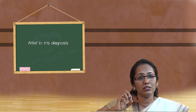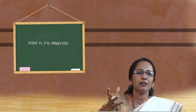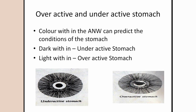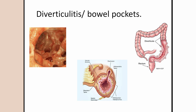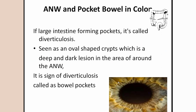You can also see overactive and underactive stomach conditions from the iris. The color changes in the area within the autonomic nerve wreath indicate how your stomach acids function. A darker color inside the wreath indicates an underactive stomach, while a lighter color indicates an overactive stomach. Next is diverticulitis — as small pockets form on the wall of the intestine called diverticula — and diverticulosis can be seen as bubble pockets in the autonomic nerve wreath. The wreath shows dark crypt-like lesions around its border, which signify diverticula in the intestine.